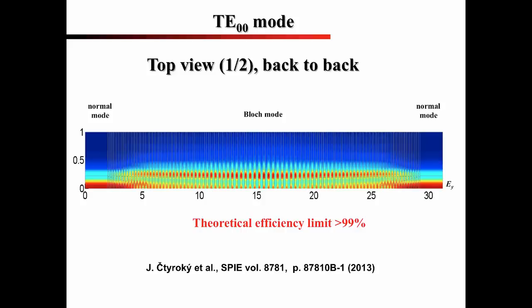Professor Izic Tiroki, from the Academy of Sciences of the Czech Republic, precisely estimated fundamental limits of performance of this coupler using his unique 3D Fourier domain simulator. The calculated results are shown here. We see the Floquet-Bloch mode pulsating along different subwavelength segments. The theoretical efficiency limit is amazingly high, more than 99%, that is less than 0.05 dB.